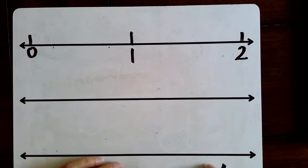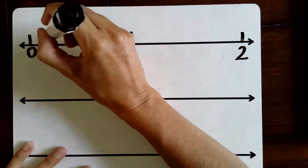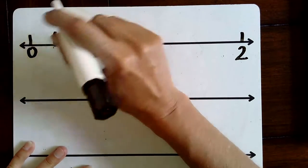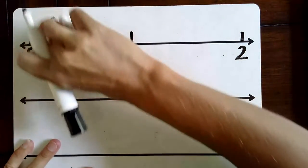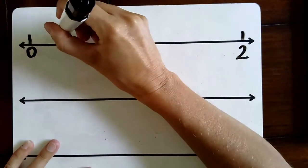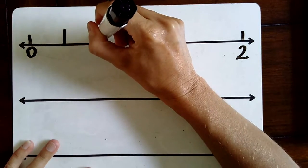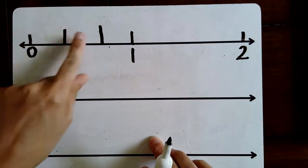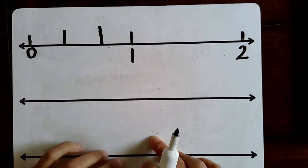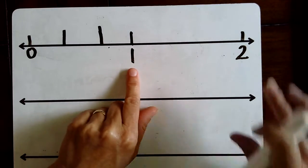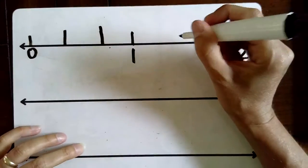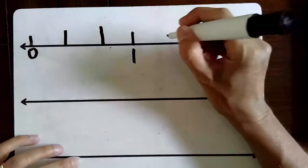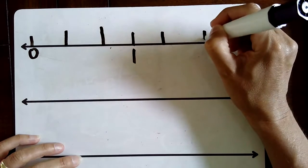Now, how can I divide this number line into thirds? I'm going to look at the first section and divide it into three equal parts. That didn't look exactly equal, so that's why it's good to use a pencil or marker that you can erase. Now I have three parts here — one, two, three. Remember, I'm not looking at anything before zero. Now I'm going to do the same thing going from one whole to two wholes. I need three parts, so I need to divide this section of the line into thirds.